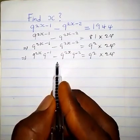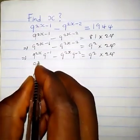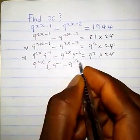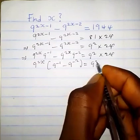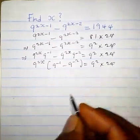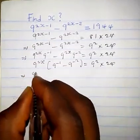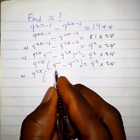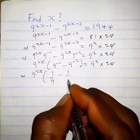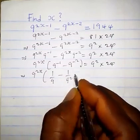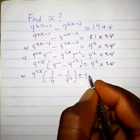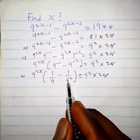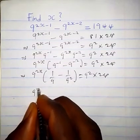9^(2s) is common on the left side, so we factor it out. We have 9^(2s) into (9^(-1) minus 9^(-2)) equals 9^(2s-2) times 24. Which implies 9^(2s) into bracket: the inverse gives us 1/9 minus 1/9² in the bracket, equals 9² times 24.